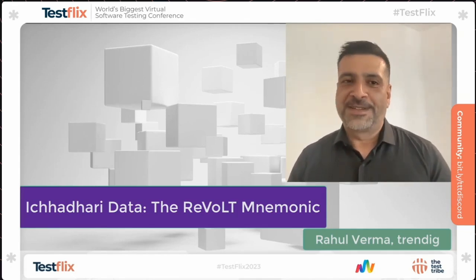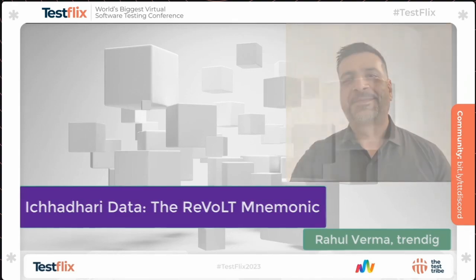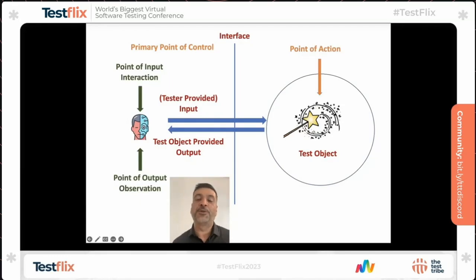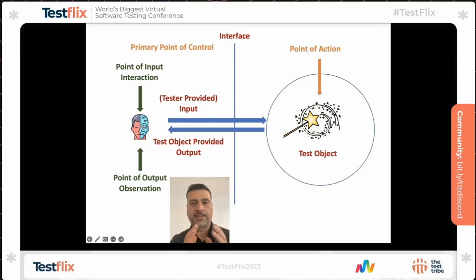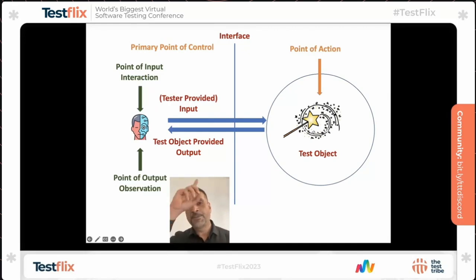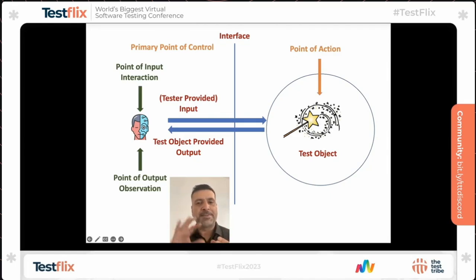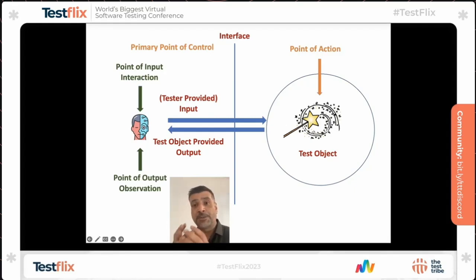On that note of humble request, let's get started. Let's start with the basic idea of how do we test. So typically there is a test object, there is an interface with which you form an input-output relationship, and outside that interface sits the tester or the test automation code. In this view, this is sort of the point of control. A tester forms an opinion that this is my boundary — I provide some input, some magic happens in the test object, and I get the output. And now based on this output, I need to form a relationship between what I see and what is supposed to be expected, and then form a decision: problem or not, pass or fail.